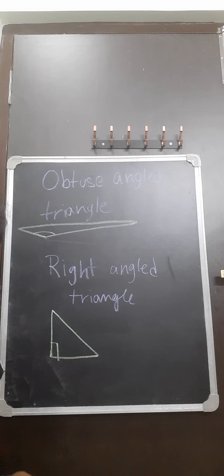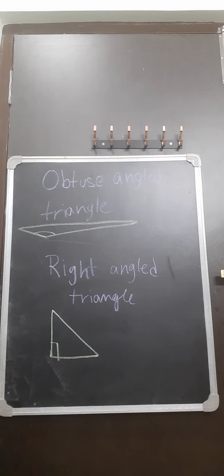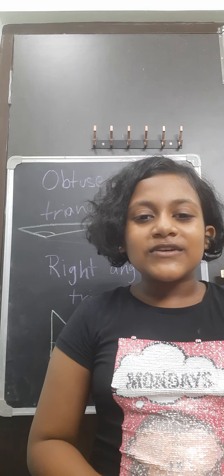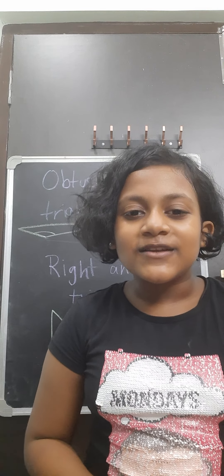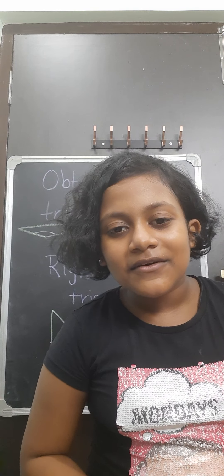Next, Right Angle Triangle. When the measure of one angle of the triangle is a right angle, those kind of triangle is Right Angle Triangle. So when one of the angle of the triangle is 90 degrees, those kind of triangles are known as Right Angle Triangle.